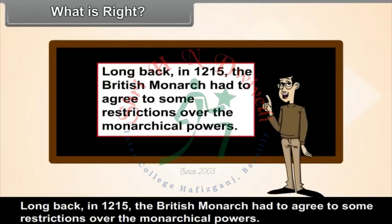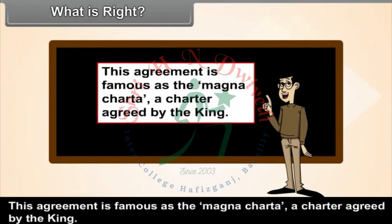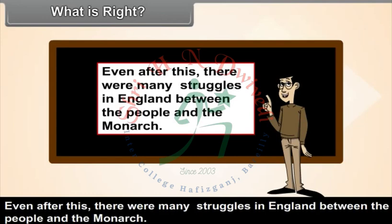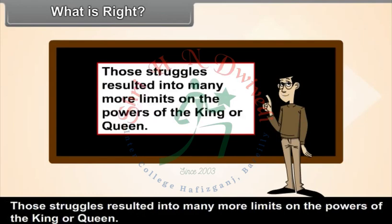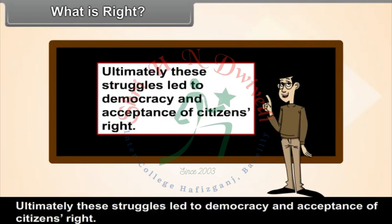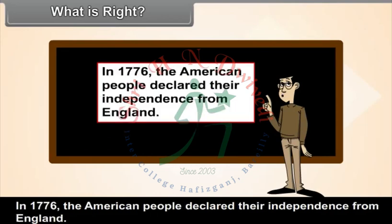Long back in 1215, the British monarch had to agree to some restrictions over monarchial powers. This agreement is famous as the Magna Charter. Even after this, there were many struggles in England between the people and the monarch. Those struggles resulted in many more limits on the powers of the king or queen, ultimately leading to democracy and acceptance of citizens' rights.